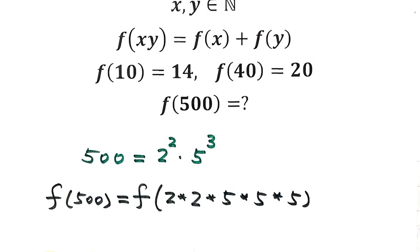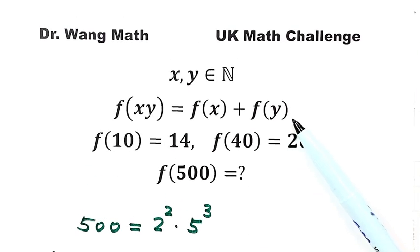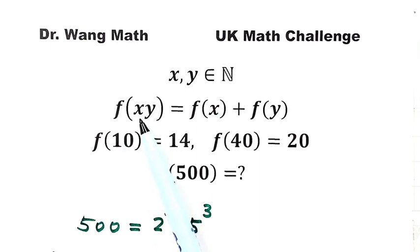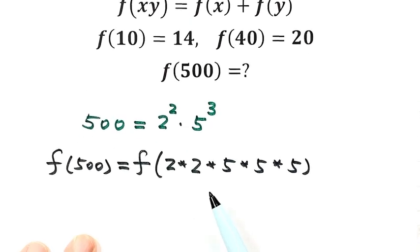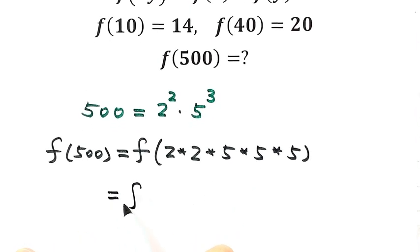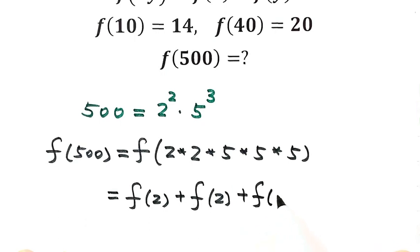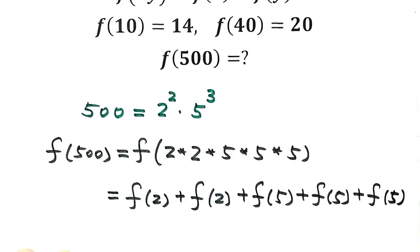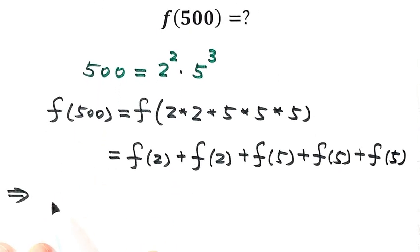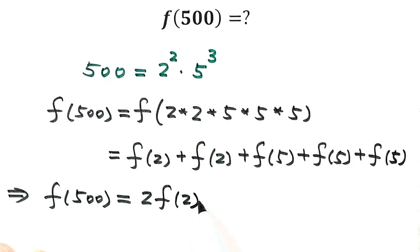The reason we are doing this is because we want to use the first condition. The first condition says for function f, the value at the product x times y equals the sum of its values at x and y. So then f of 500 equals f of 2 plus f of 2 plus f of 5 plus f of 5 plus f of 5, which gives us 2 times f of 2 plus 3 times f of 5. We label this as Result 1.